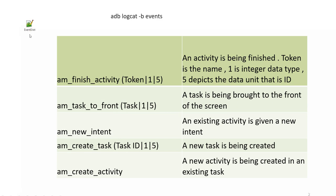So, event logs — I already told how to collect event logs. We have to use the `adb logcat -b events` command in order to collect the event logs, and I have already shown you all in my previous session how these logs look like. A few important activity manager related events we will see in today's session.